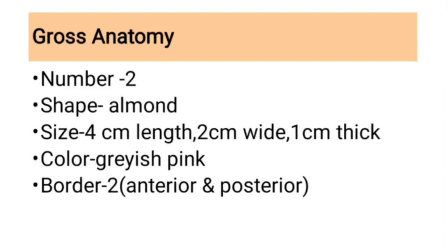The gross anatomy of the ovary: it is paired, almond-shaped, four centimeters in length, two centimeters in width, and one centimeter thick. Color is grayish. It has two borders: anterior border, also called the mesovarian border, and posterior border, also called the free border.